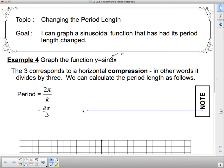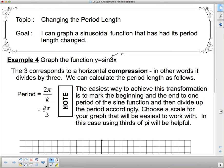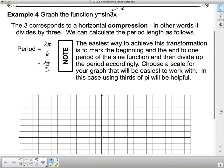So let's see what this little note says here. The easiest way to achieve this transformation is to mark the beginning and the end of one period of the sine function and then divide up the period accordingly. Choose a scale for your graph that will be easiest to work with. In this case using thirds of π will be helpful. So if I can use things as thirds of π so that I know where 2/3π is, then that will help me. So I could have it in thirds or I could have it in sixths or something that would be easy to get there.